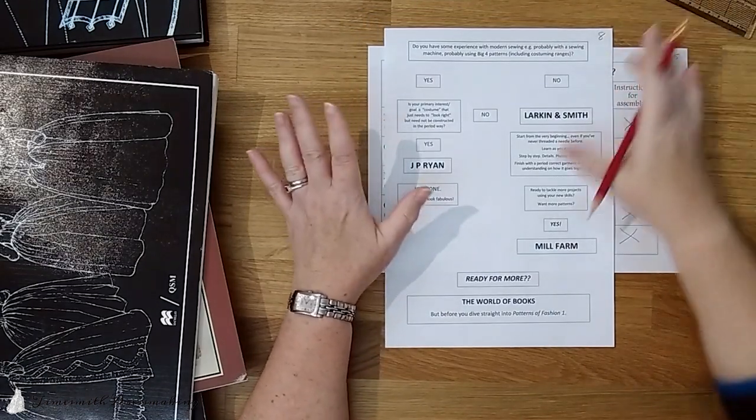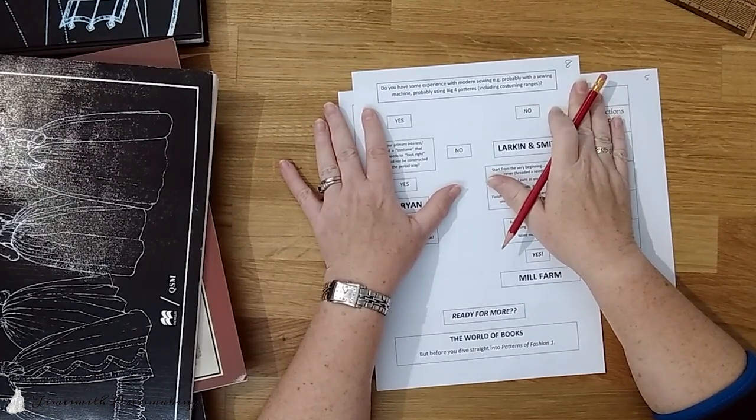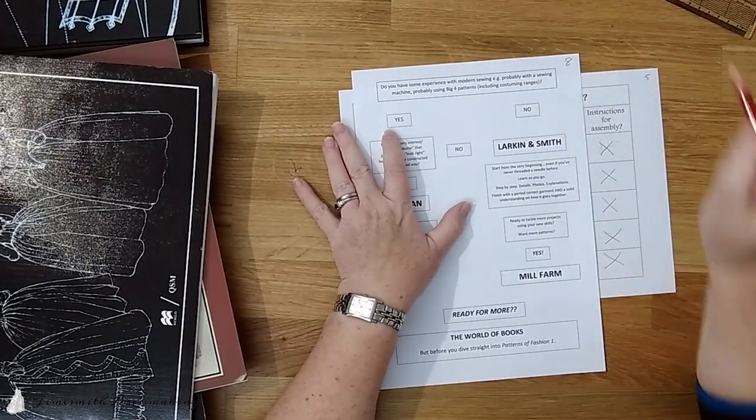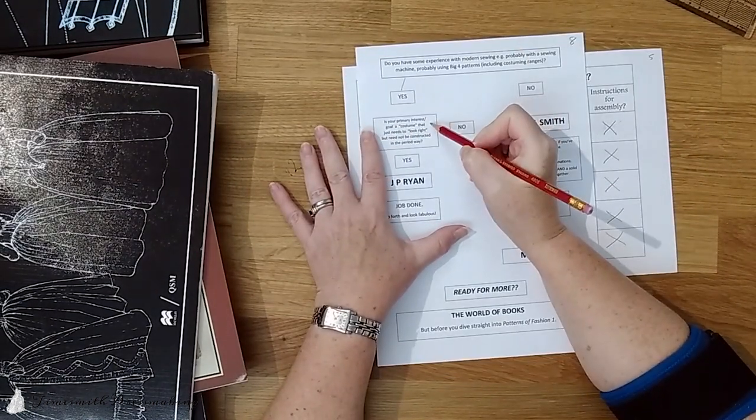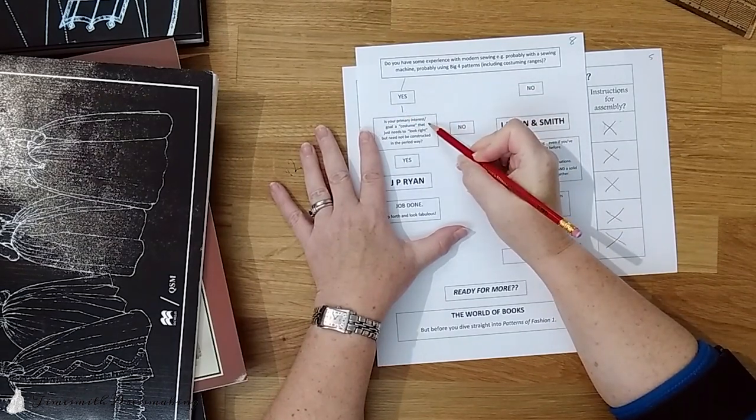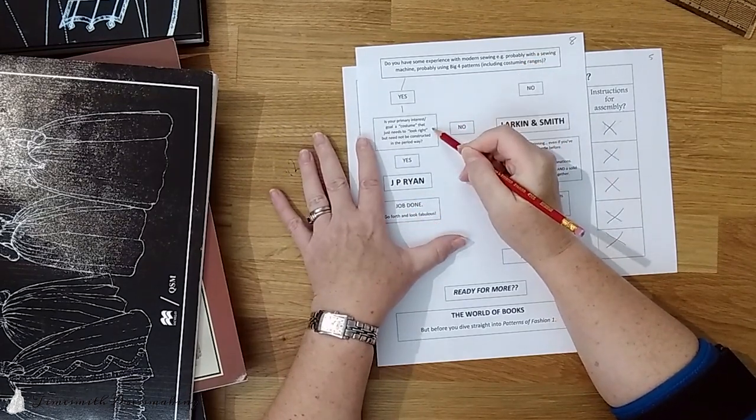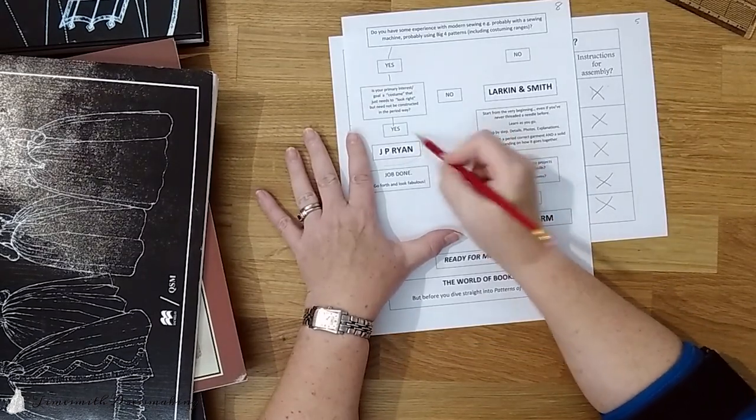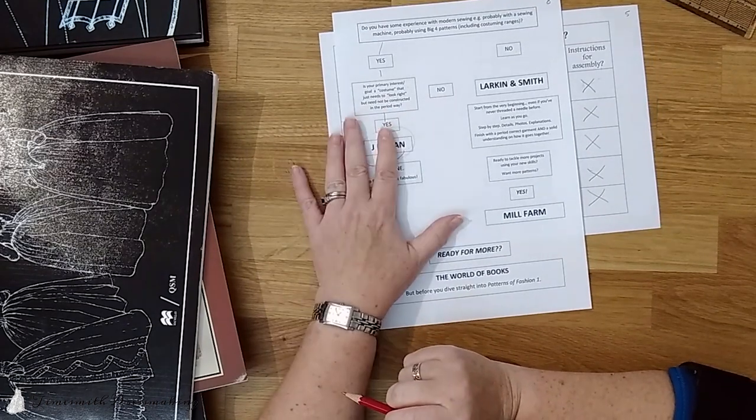I'm a flowcharts person. So we're going to start with a basic question. Do you have some experience with modern sewing? Probably with a sewing machine, probably using the big four patterns, including their costuming ranges. Yes or no? If the answer is yes, you do have some experience, go here. Then we ask, Is your primary interest or goal a costume that just needs to look right, but need not be constructed in the period way? Yep, if that's good enough, that's what you're after. Yes, JP Ryan. Go forth and look fabulous. That's what you need. That pattern will work. Those patterns will work for you.